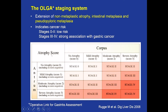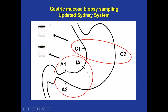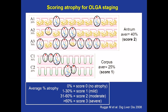The OLGA staging system was the first to appear in the literature, more than 10 years ago, and includes the extension of non-metaplastic atrophy, intestinal metaplasia, and pseudopyloric metaplasia. Stages 0 to 2 are considered low risk of progression to cancer, and stages 3 and 4 are considered high risk. Here is a combination of atrophy scores in the antrum and the corpus — this atrophy includes all these variants. For the updated Sydney system, two biopsies from the corpus can be submitted in one jar and three others in a different jar, but it is important that these two compartments are submitted separately.